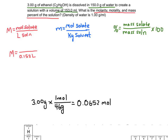With 0.0652 moles of solute plugged in on top, we divide by 0.153 liters of solution and end up with a molarity of 0.426 M.